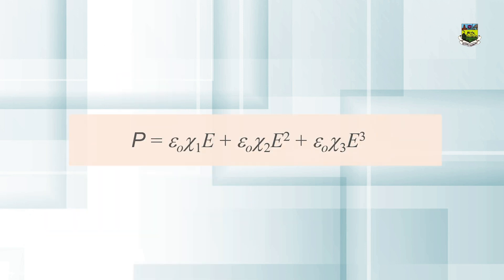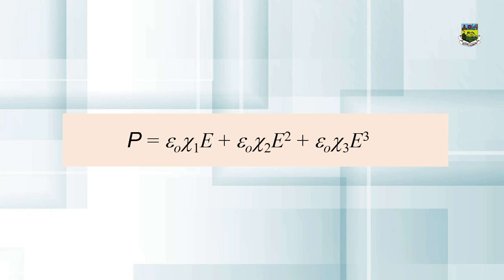When we use laser light, as mentioned earlier, additional terms arise — second harmonics, third harmonics, etc. For that, we modify the equation ε₀χE by using higher powers of χ and E: χ₁E + χ₂E² + χ₃E³ + χ₄E⁴, and so on. We substitute this into the normal polarization equation P = ε₀χE.